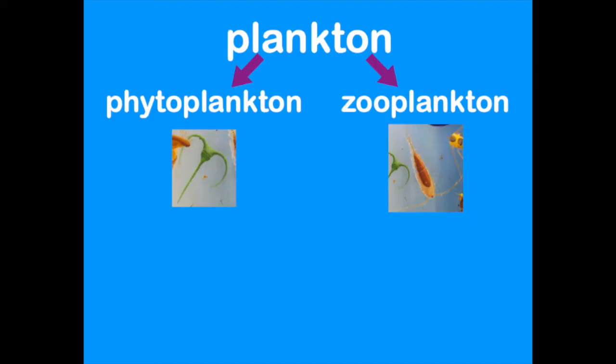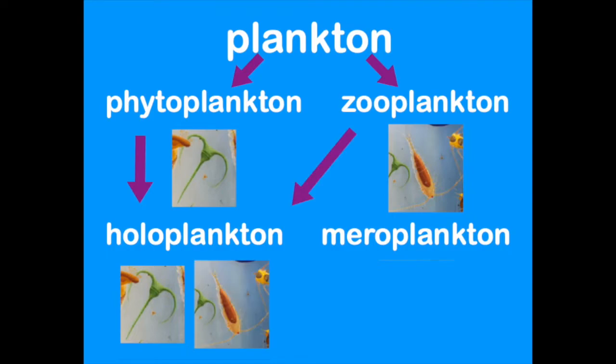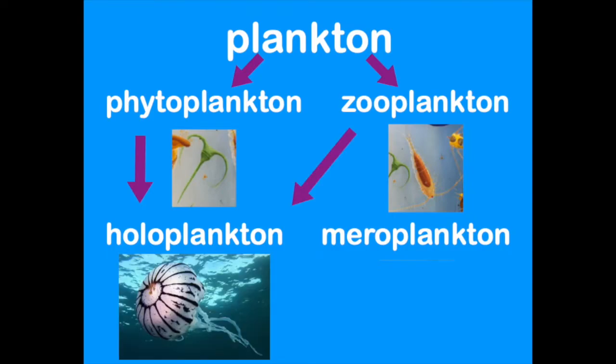Let's get back to defining our plankton. In addition to being plant-like or animal-like, plankton are also either holoplankton or meroplankton. Holoplankton will be plankton for their entire life cycle — they will always be drifters. This applies to all phytoplankton, as well as many zooplankton, like copepods and even jellies.